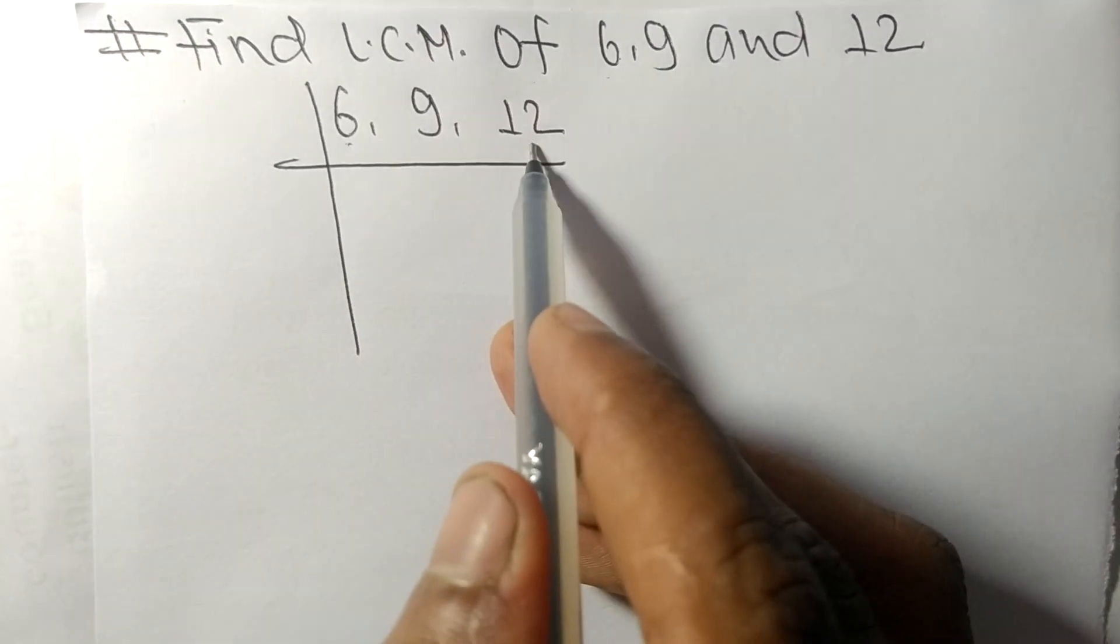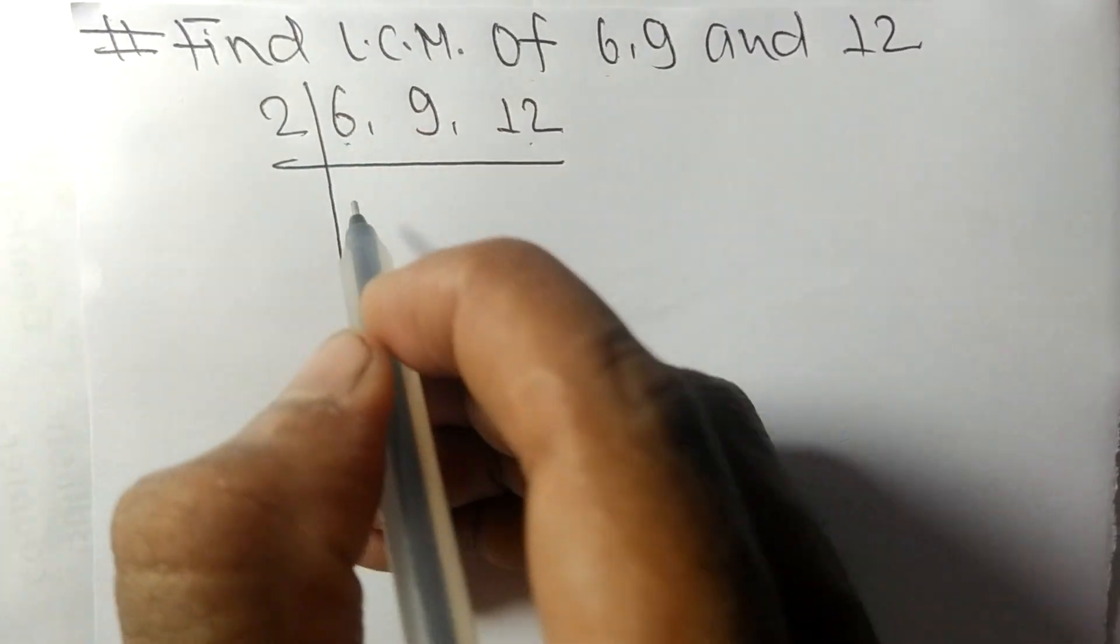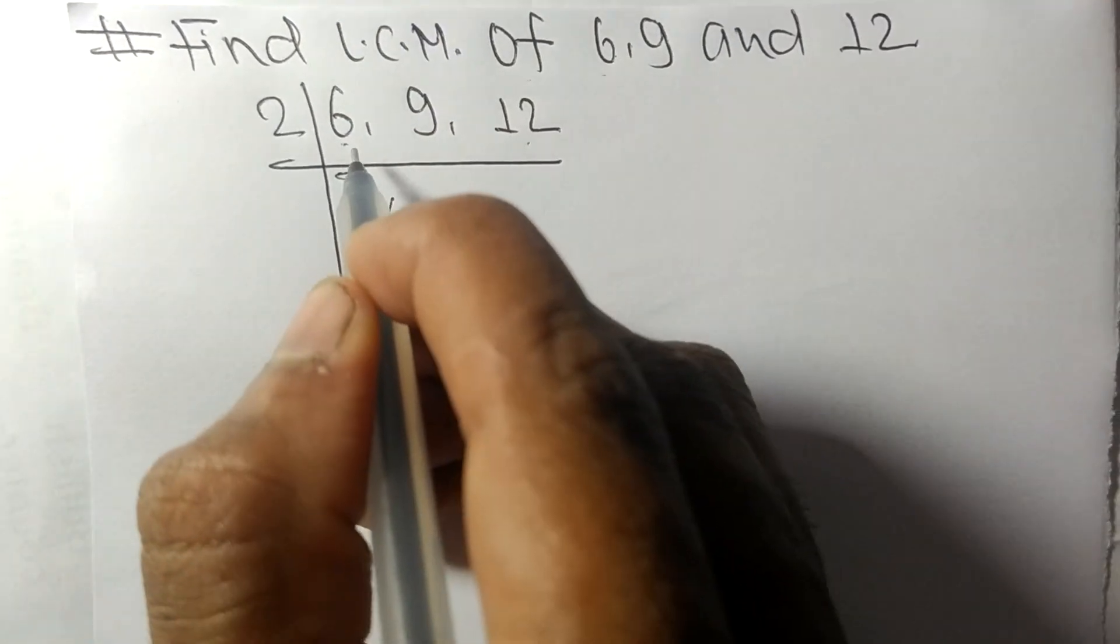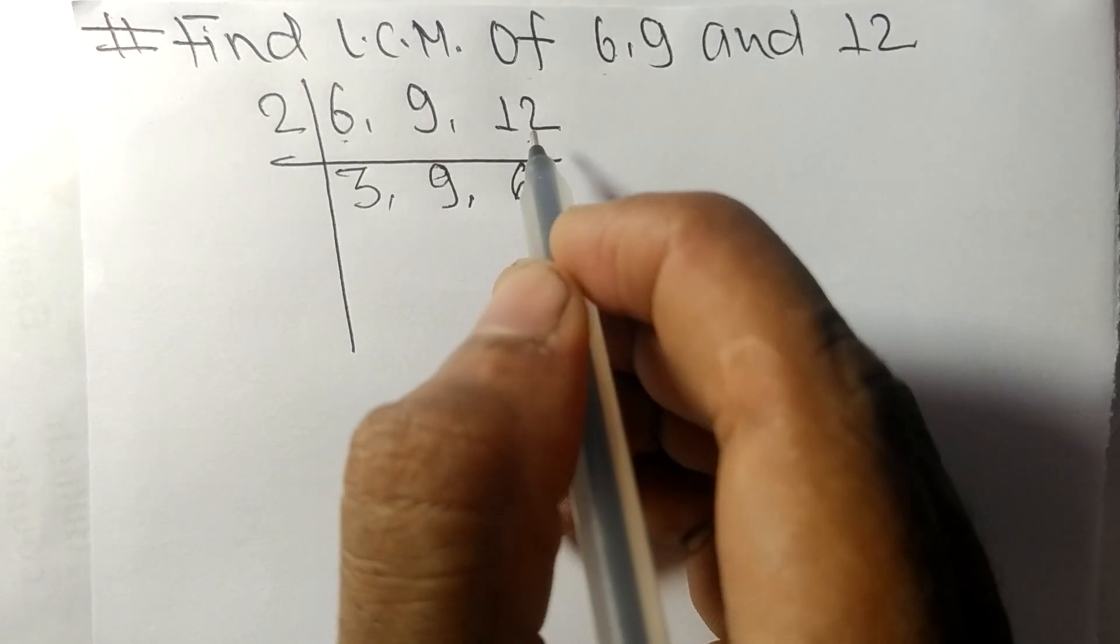6 and 12 are exactly divisible by 2. 2 times 3 means 6, 9 as it is, 2 times 6 means 12.